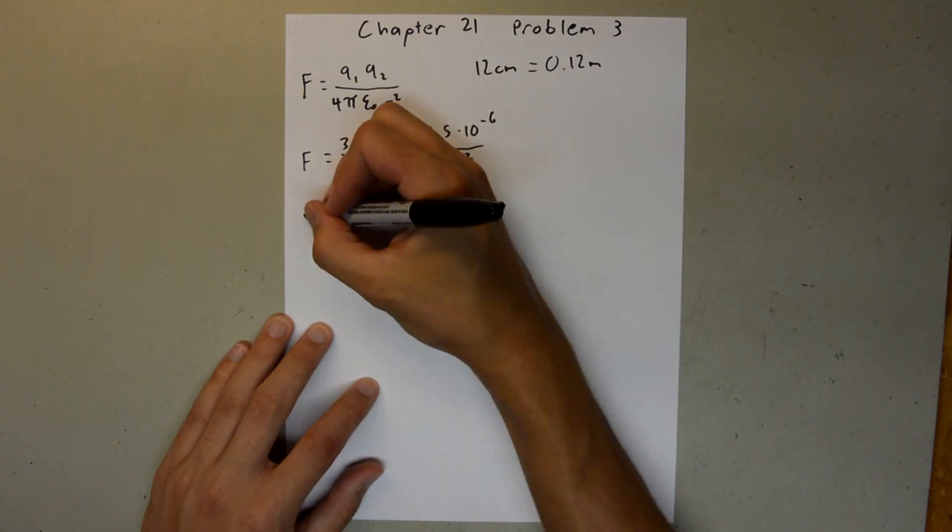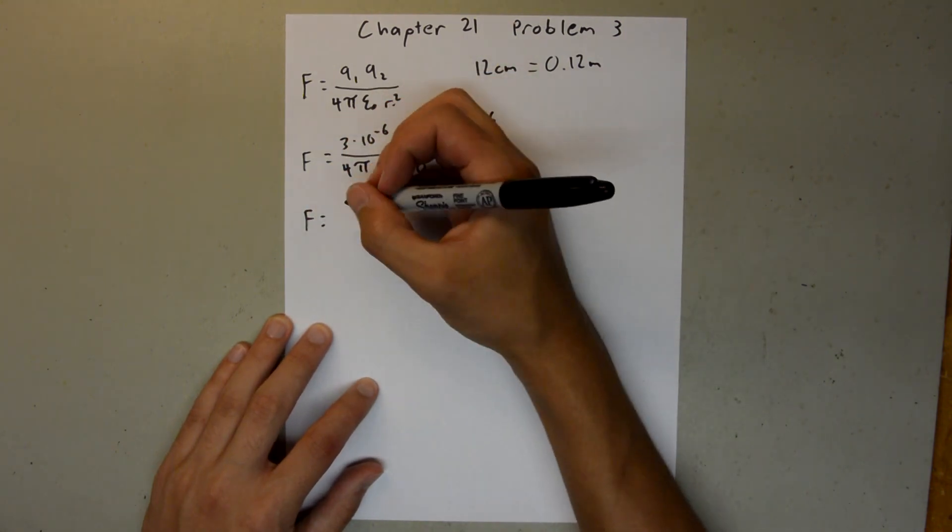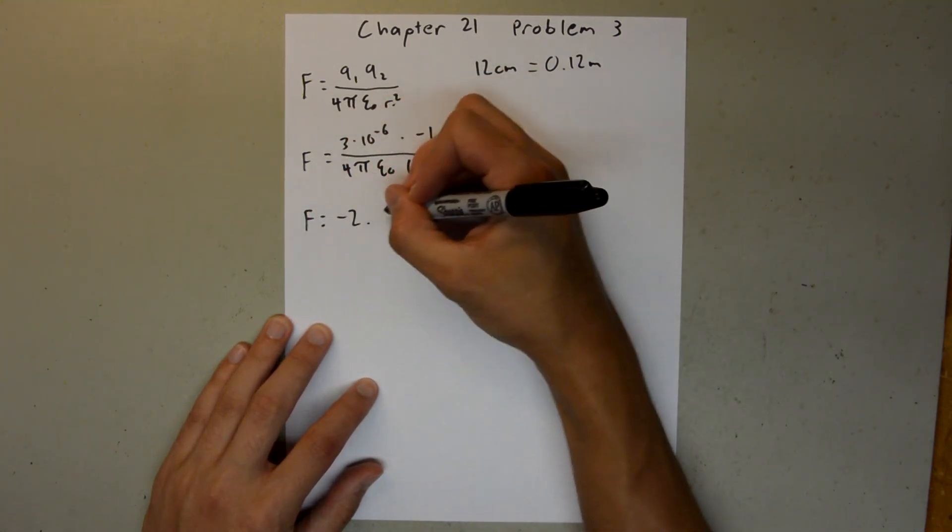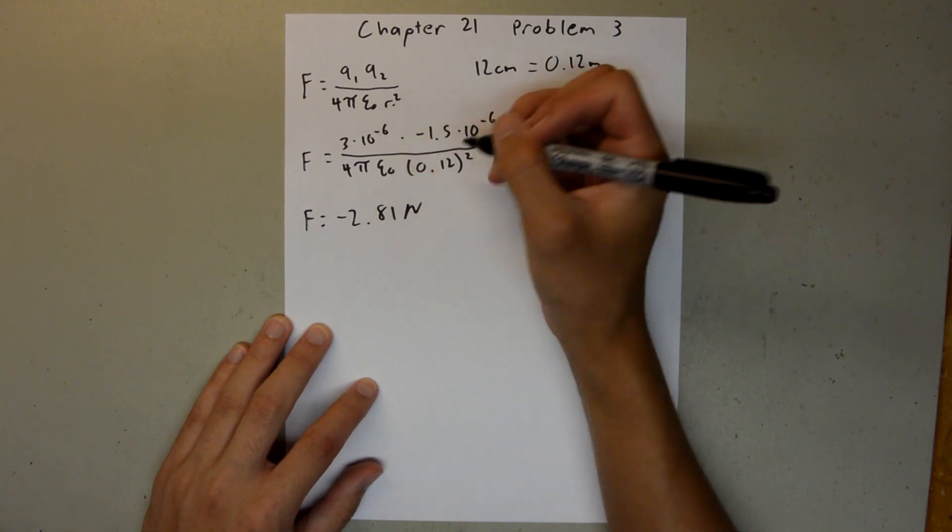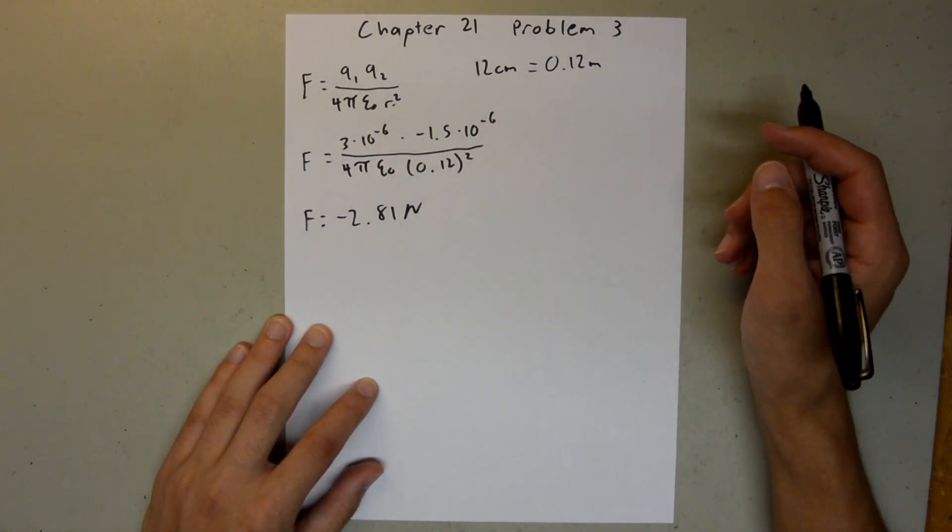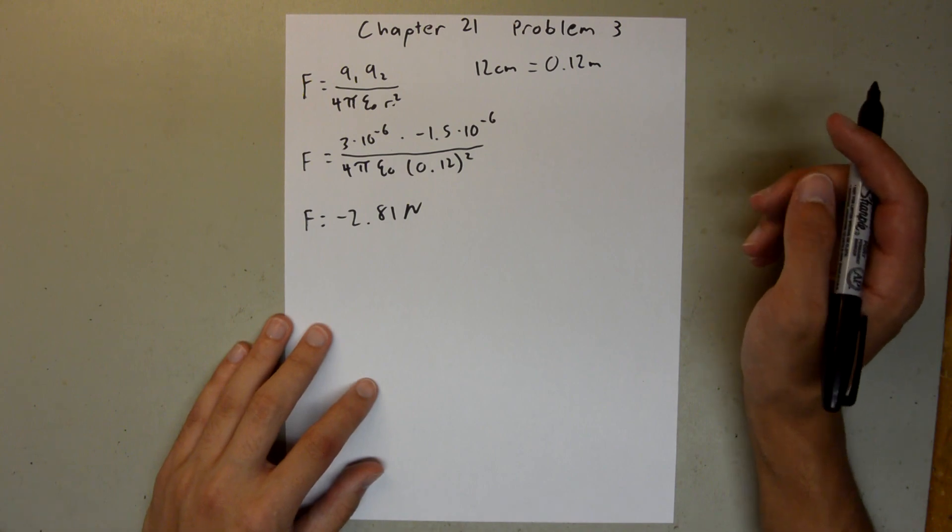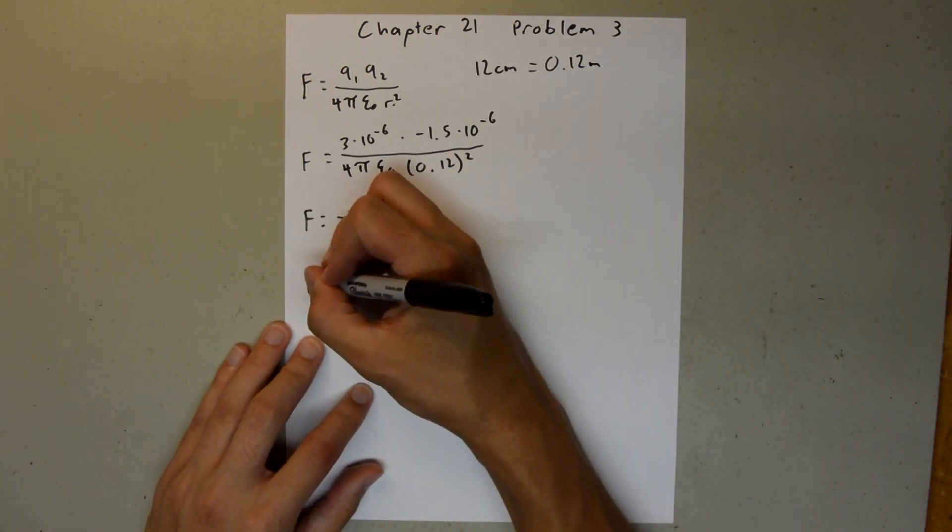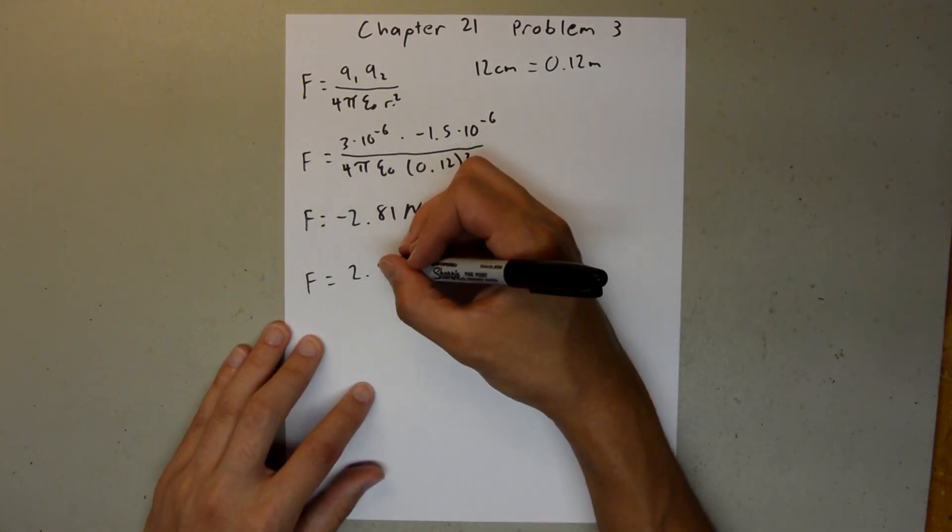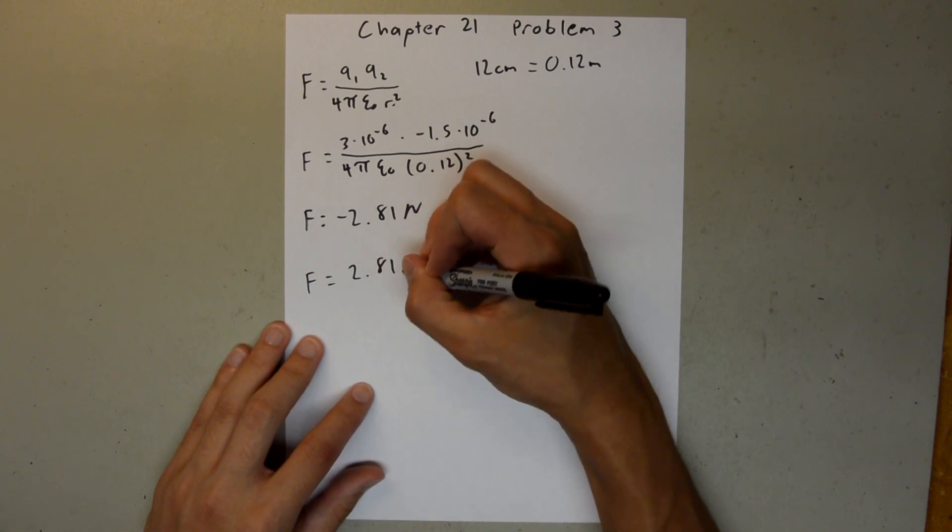And when you plug that into your calculator, you should get the force is equal to negative 2.81 newtons. But in the problem, it asks for the magnitude, which means it is the absolute value of this. So the magnitude of the electrostatic force is 2.81 newtons.